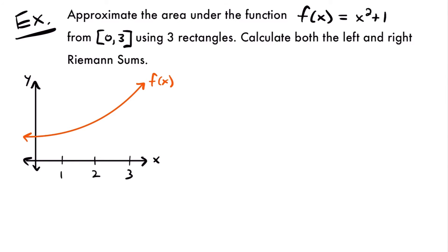Alright, welcome back. Let's start with this example. We want to approximate the area under the function f of x equals x squared plus 1 from 0 to 3 using 3 rectangles. Calculate both the left and right Riemann sums.